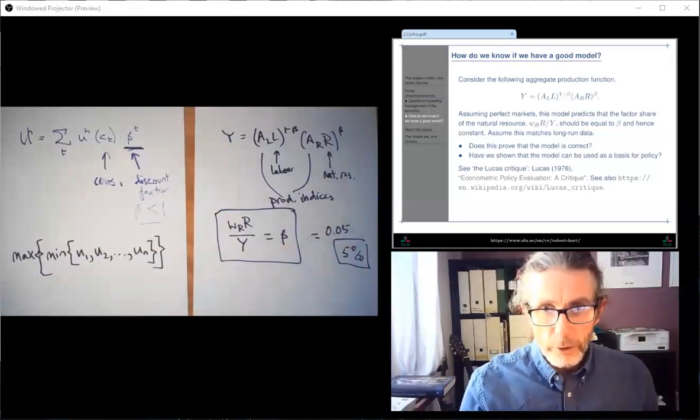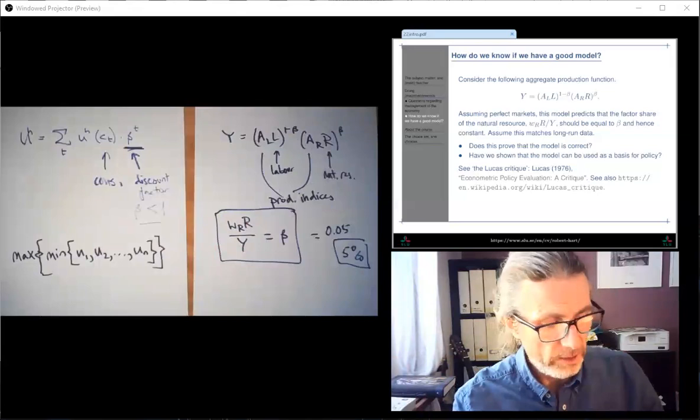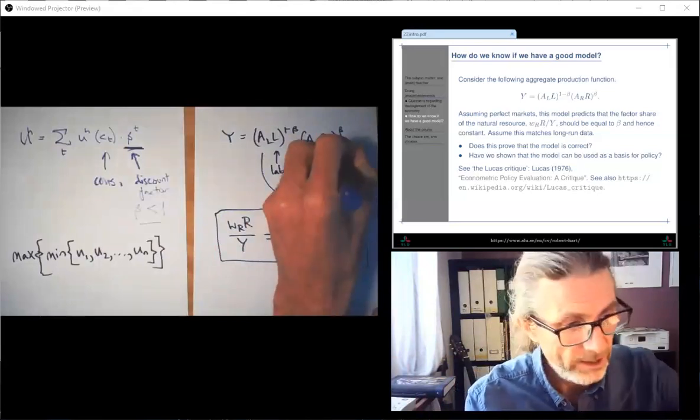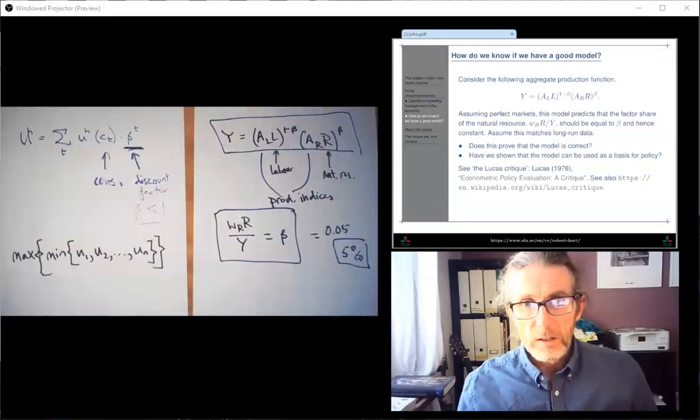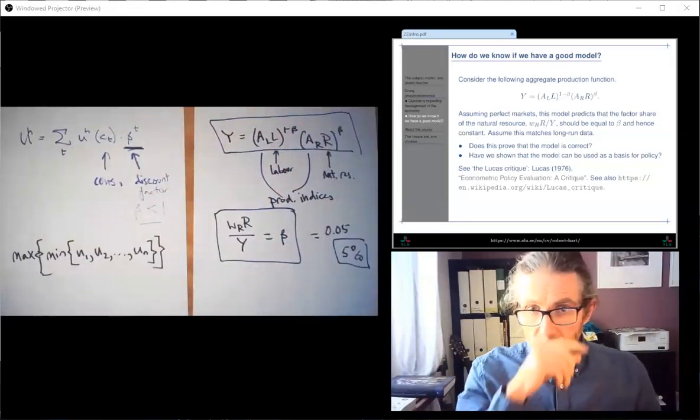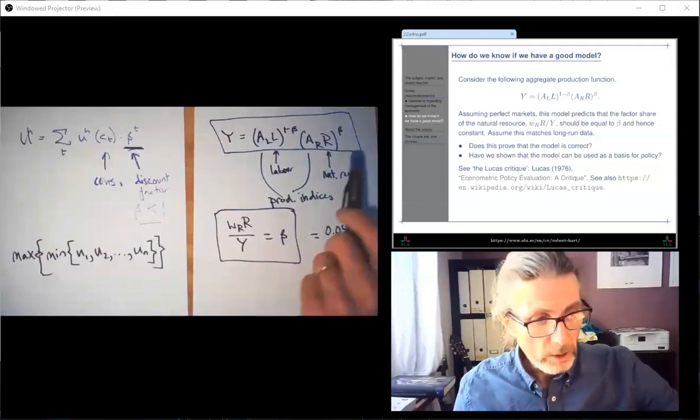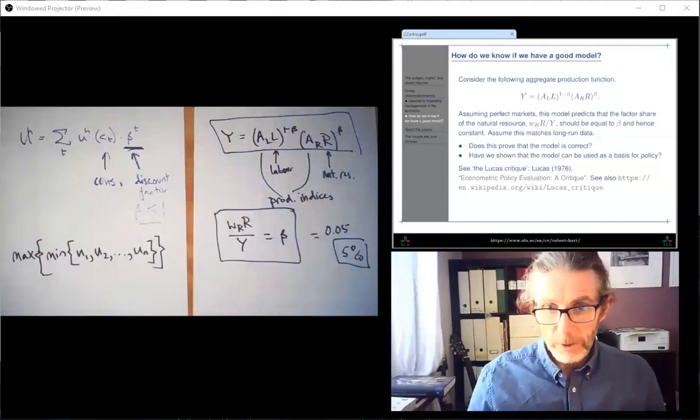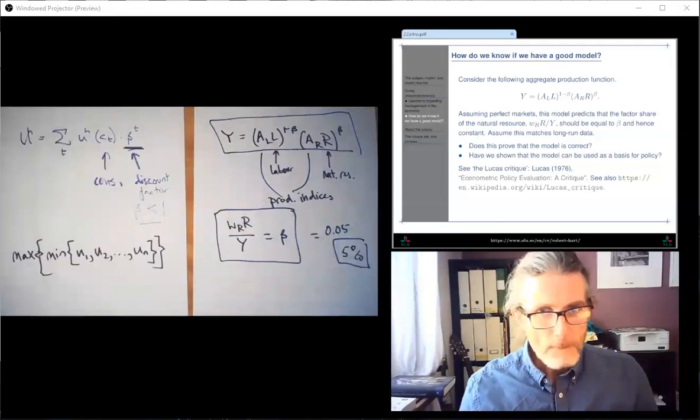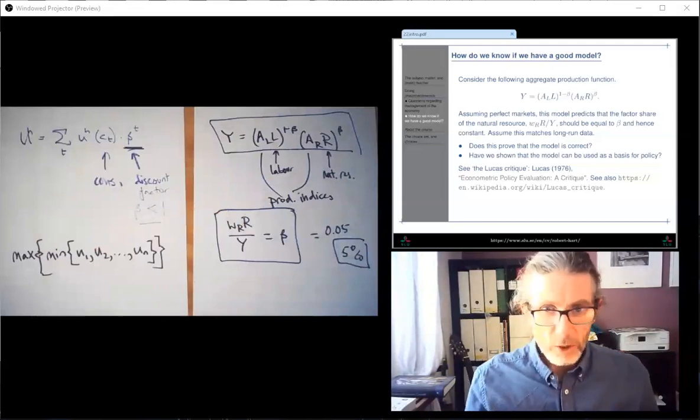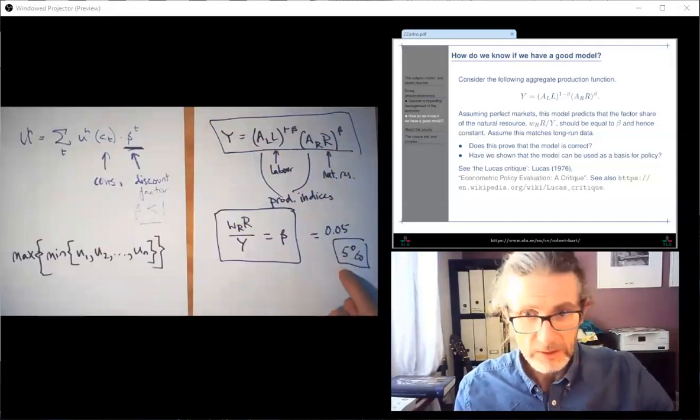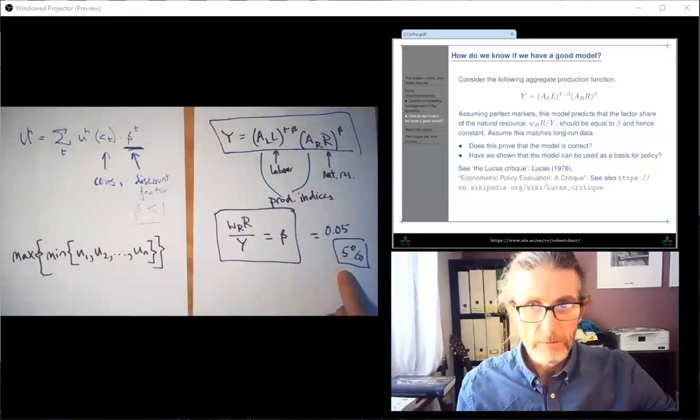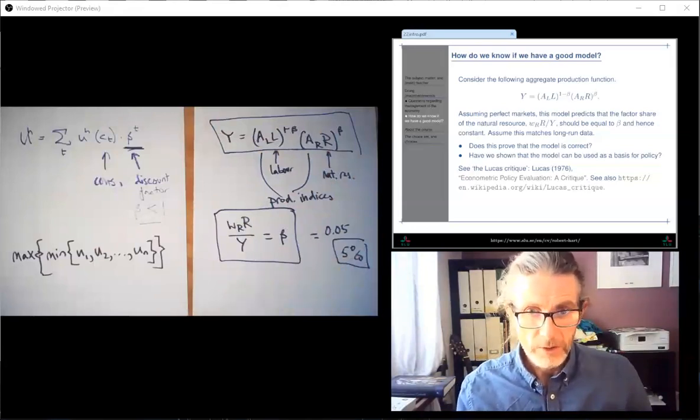And that tallies with this basic idea for the production function. Does that prove that this production function is correct? Does it show that we can use a model based on this production function as a basis for policy? It doesn't at all, right? There could be loads of other production functions that were also more or less consistent with this observation. Okay, but which would have very different policy implications.